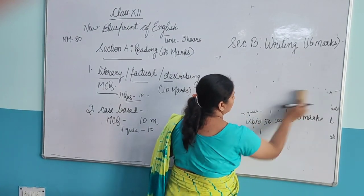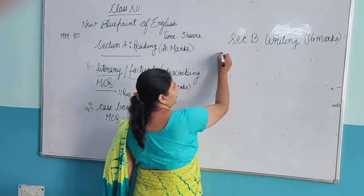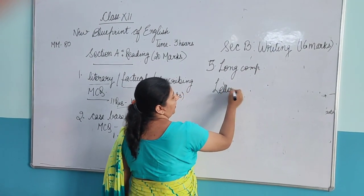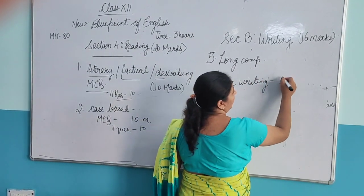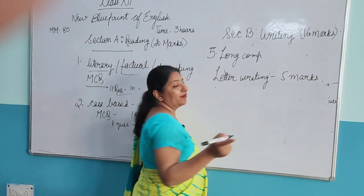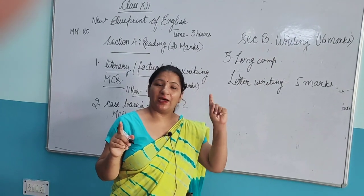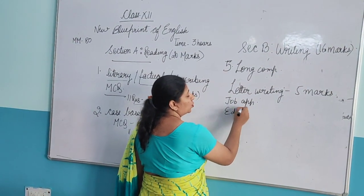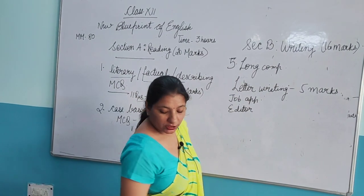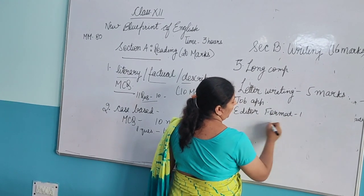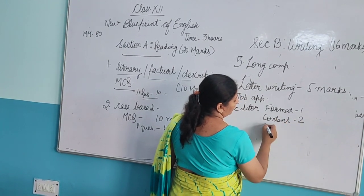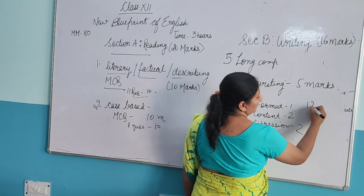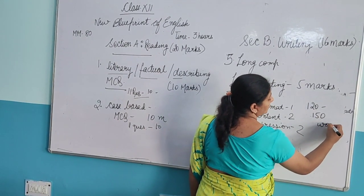Questions three and four are the short compositions. Next comes the fifth question — long composition — which will be letter writing, of 5 marks. As already mentioned, only two types of letters remain: job application and letter to the editor. Two questions will be given and you have to do any one. The distribution is: Format 1 mark, Content 2 marks, Expressions 2 marks. The word limit is 120 to 150 words.